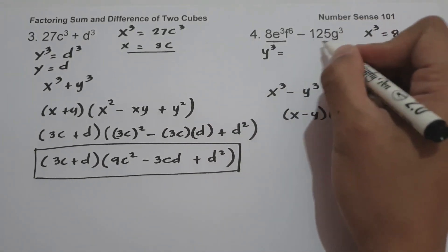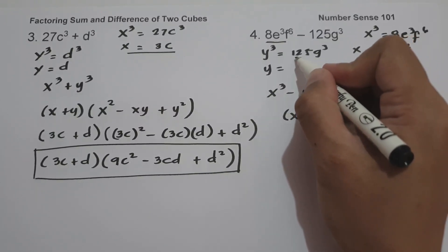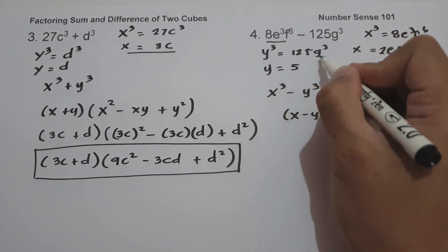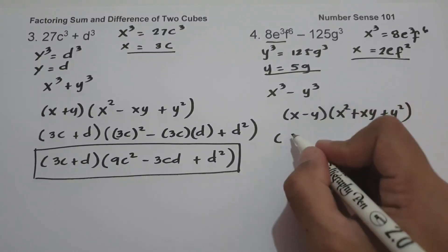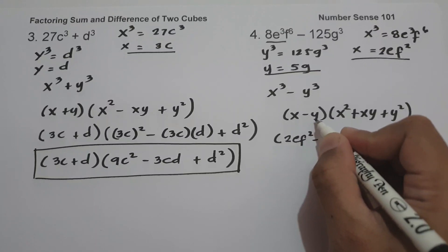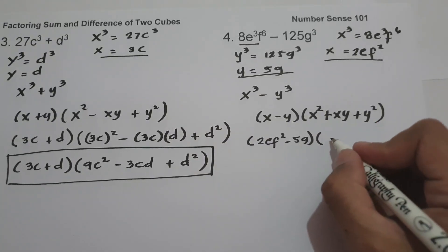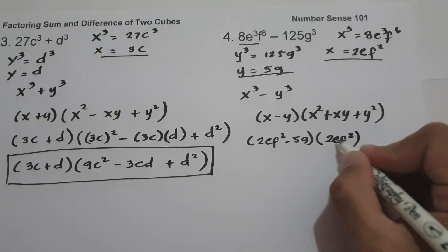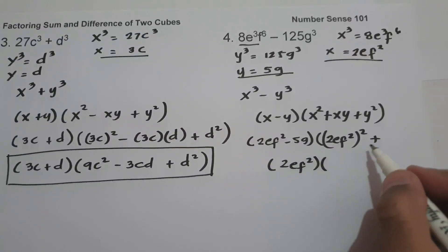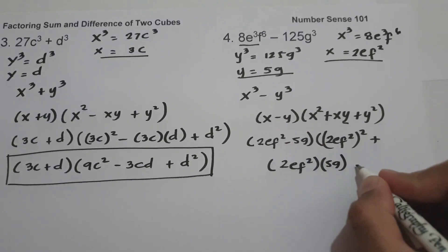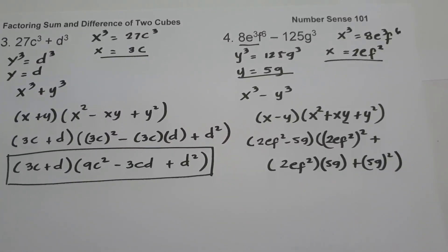Then y³ is the last term, 125g³. To find y: the cube root of 125 is 5, and the cube root of g³ is g, so y = 5g. So we have x − y, which is 2ef² − 5g, times x² = (2ef²)², plus x times y = 2ef² times 5g, plus y² = (5g)².